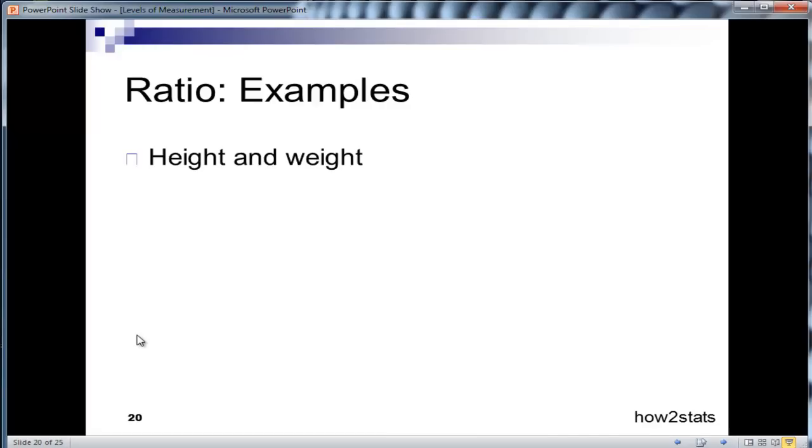So let's look at examples. Height and weight: there is zero height and zero weight and it's meaningful to say that there is zero height for something. Or number of times someone has left a country, that's a really meaningful ratio scale because some people will score zero and it means something to score zero on an item like number of times someone has left a country.